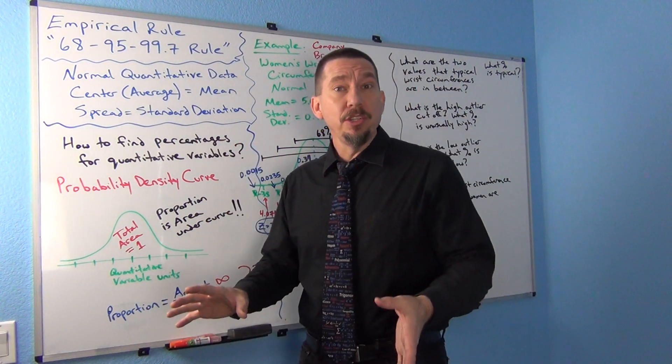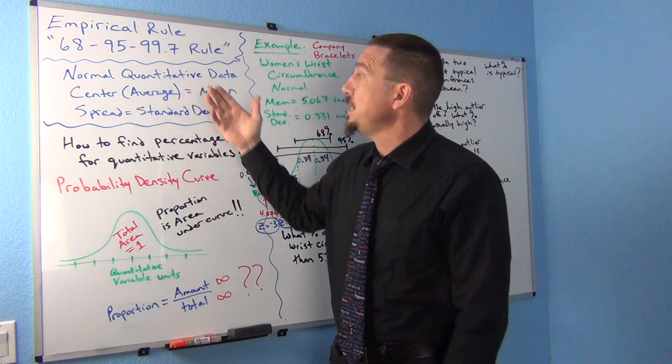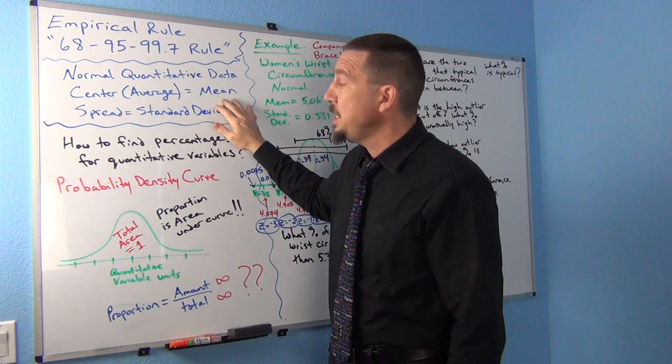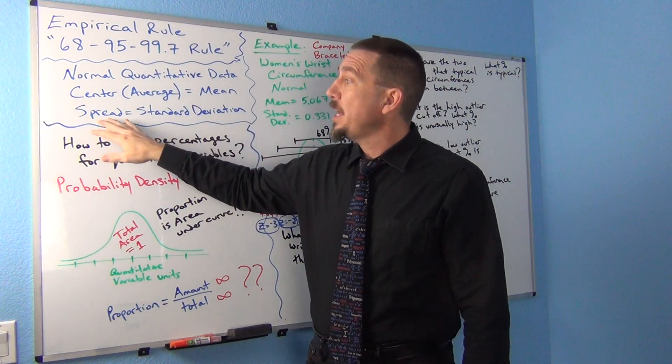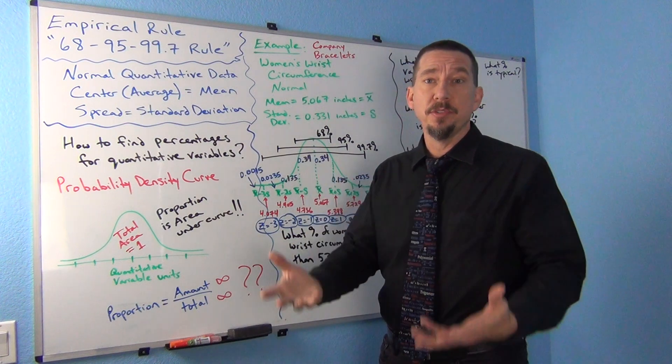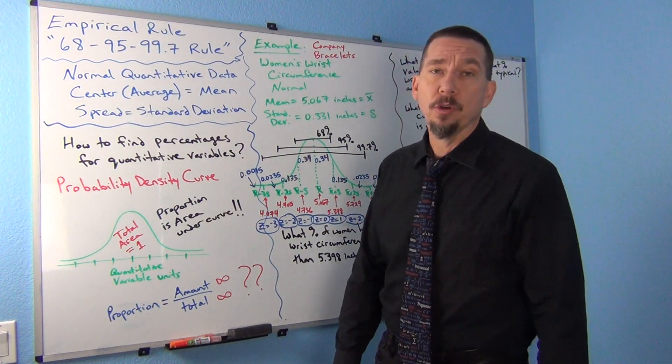Just to kind of remind you again, when we went over normal quantitative data we said that the center or the average should be the mean and the spread or the variability is measured by the standard deviation. That's the most accurate measure of spread for normal data.